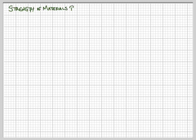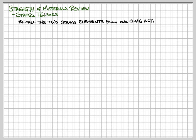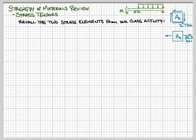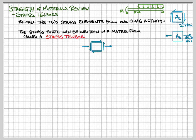I want to give another review and some additional information about strength of materials topics. The first thing I'm going to talk about is stress tensors. We're going to use our problem from class where we had a beam with a bending moment and a distributed load, and at the cross-section at point A we end up with two stress states: one at the centroid with a shear stress of 2.7 ksi, and one at the bottom with a tensile stress of 50.3 ksi. You can write the stress state in a simpler matrix form, which we call a stress tensor.